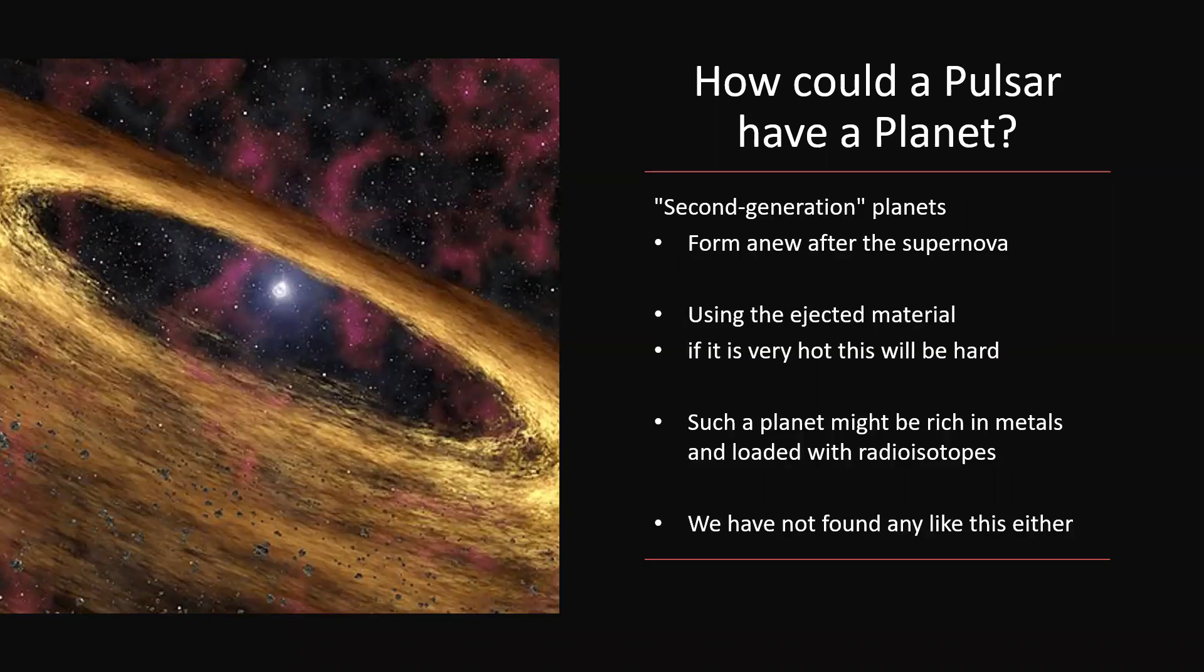After a supernova explosion you may well get a disk of material forming around the resulting pulsar. The ejected material gathering together - it has to be cold in order to do this. If it's very hot the energy will just prevent this from happening, so it needs to cool down first. So it might take a while, but you might get a planet forming out of one of these disks, and such a planet would be very interesting. It would be very rich in metals, the heavy elements, and loaded with radioisotopes because these supernova remnants are absolutely stuffed full of radioactive material. And well, we haven't found any of these either.